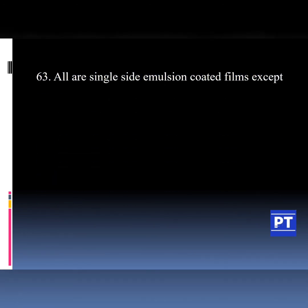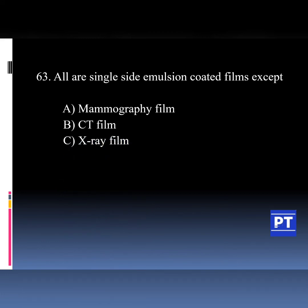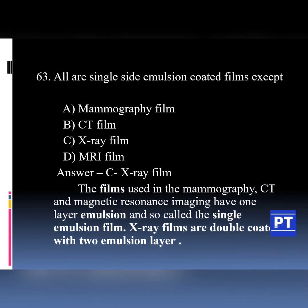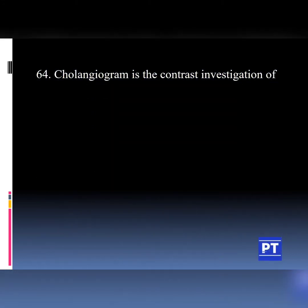Question number 63: All are single side emulsion coated films except which one? Option A Mammography film, Option B CT film, Option C X-ray film, Option D MRI film. The answer is Option C, X-ray film. The films used in mammography, CT, and MRI have one emulsion layer, so they are called single emulsion films. Whereas X-ray films are double coated with two emulsion layers.